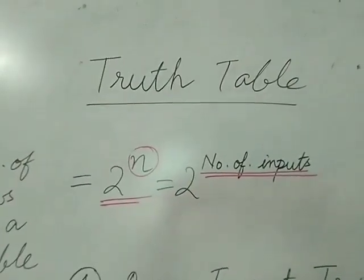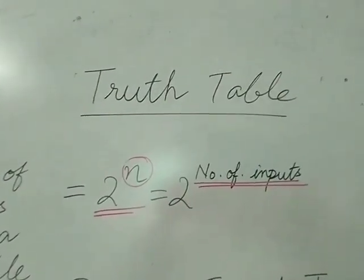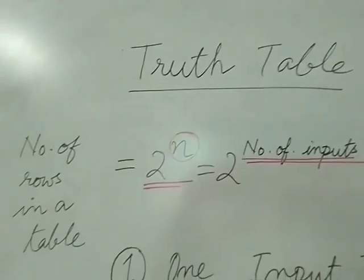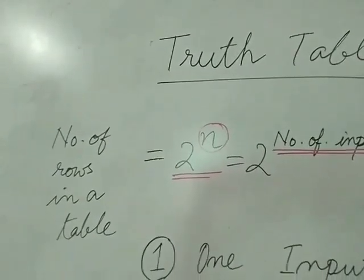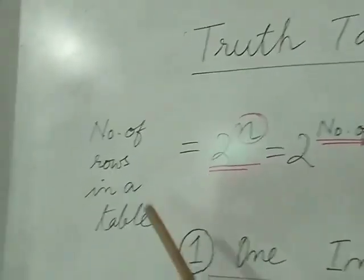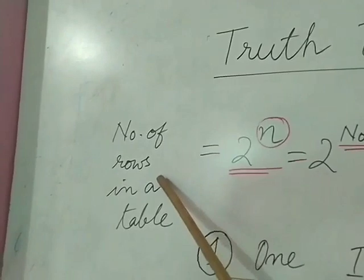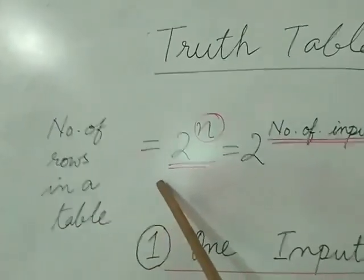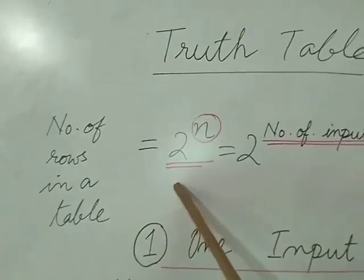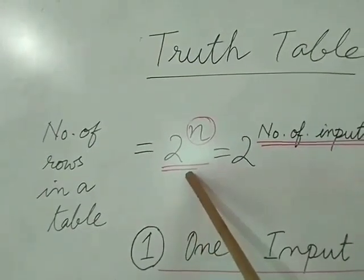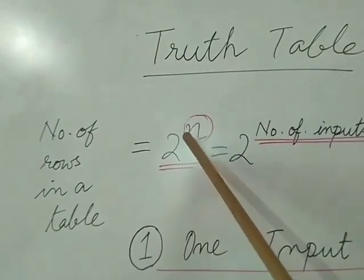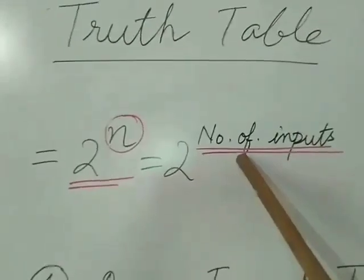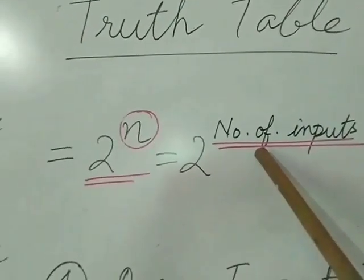Now we'll see how to create a truth table. Whenever we create a truth table, the most important thing is to determine the number of rows. In order to create the number of rows in a table, there is a formula: 2 to the power n, where n stands for the number of inputs.